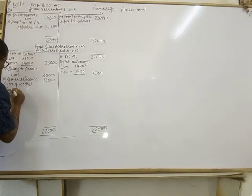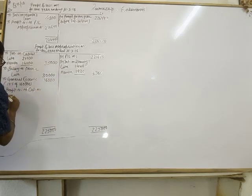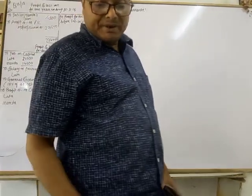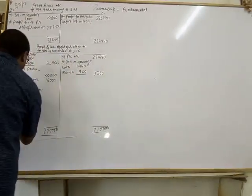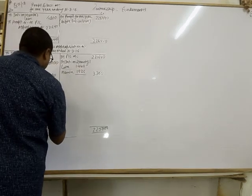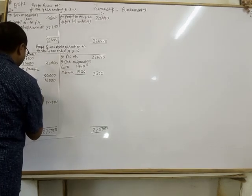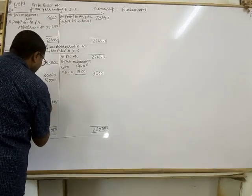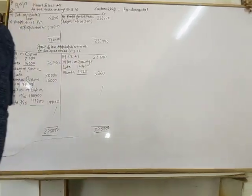Profit transferred to partners' capital accounts — Lata and Mamta — in profit sharing ratio of 7:3. Lata gets 7/10 of 1,44,000 equals rupees 1,00,800. Mamta gets 3/10 of 1,44,000 equals rupees 43,200. Thank you, friends.